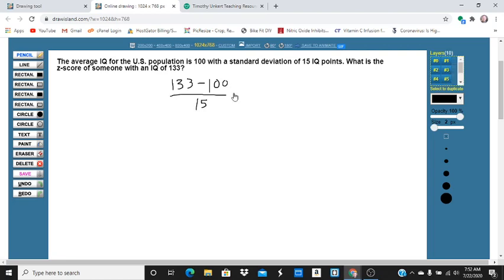So we get 33 divided by 15, which is 2 and 3 fifteenths. 3 fifteenths is one-fifth, so it's 2.2. Our Z-score is 2.2.